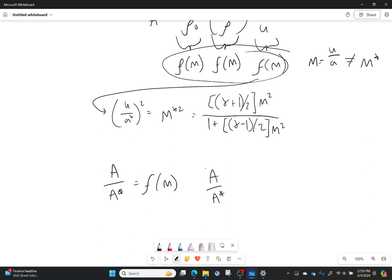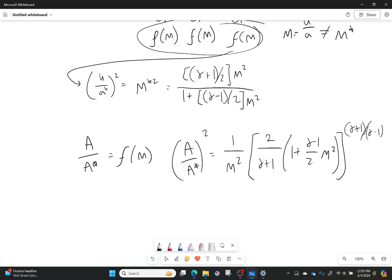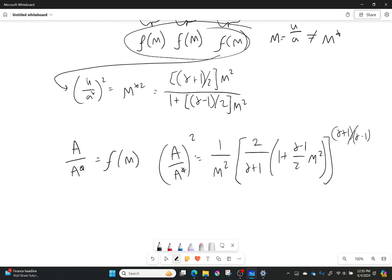As a note this is for A over A star squared that'll be equal to 1 over my Mach number squared times 2 over gamma plus 1 times 1 plus gamma minus 1 over 2 times my Mach number squared gamma plus 1 gamma minus 1. There we go and so this is also this is also called the area Mach number relationship.